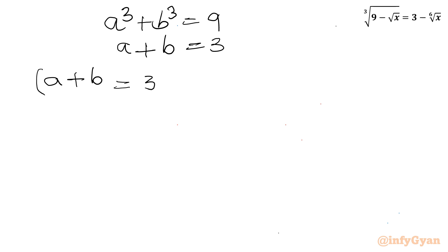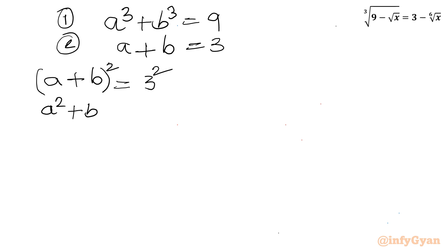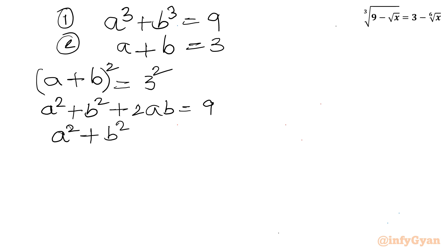Let me write a plus b equal to 3, and consider squaring both sides. Using the formula: a squared plus b squared plus 2ab equal to 9. So from here I can write a squared plus b squared equal to 9 minus 2ab. Let us call this equation 3.